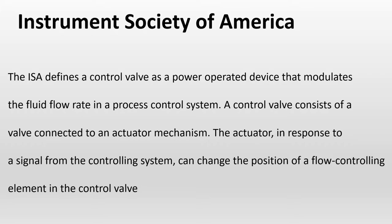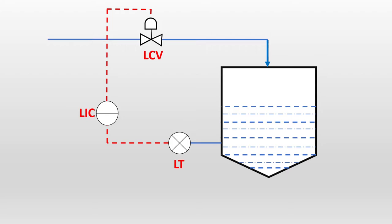Now let's see how a control valve controls the process fluid. There is a vessel or tank with process fluid inside. A level transmitter continuously measures the level and sends a signal to the LAC — the Level Indication Controller. The controller has a set point, a manipulated variable, and a process variable. It performs calculations and an algorithm, then sends a signal to the level control valve.